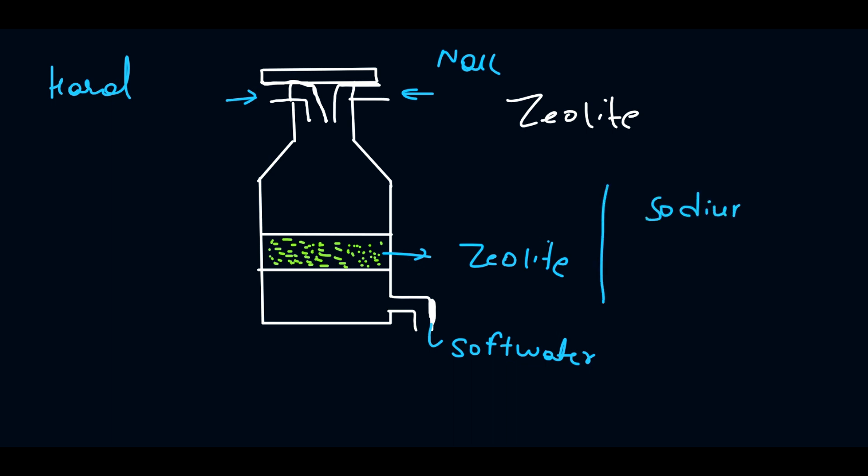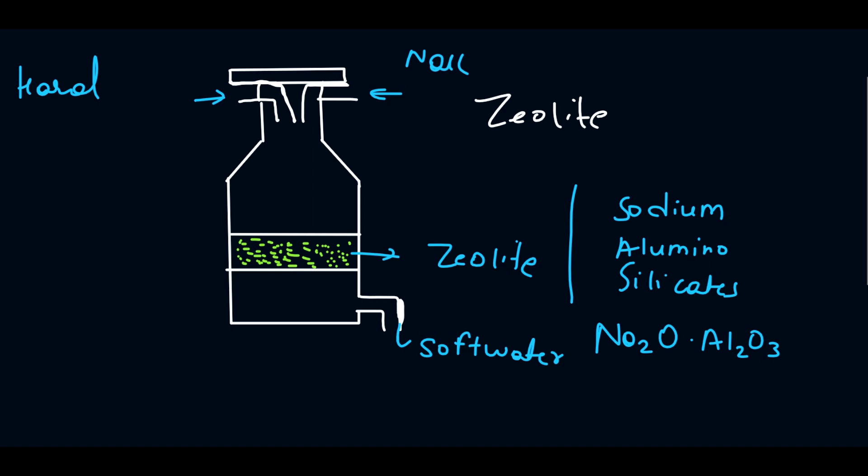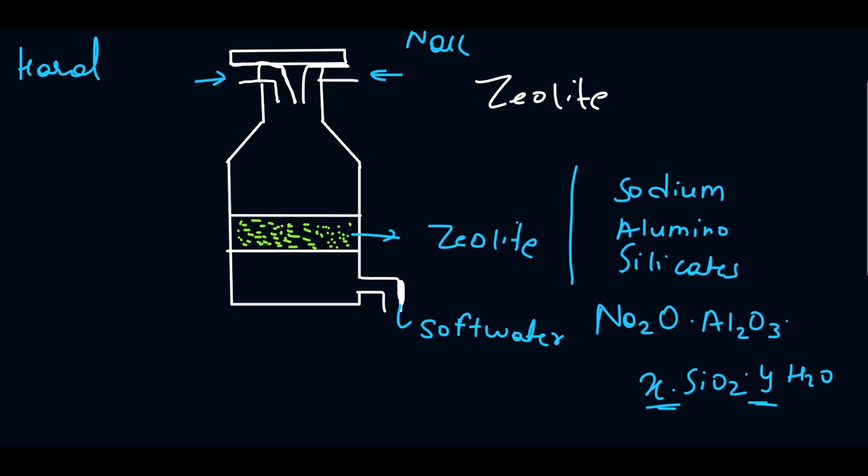What is zeolite made of? It is made of sodium aluminum silicates. The formula is Na2O·Al2O3·X SiO2·Y H2O, where X and Y denote the number of molecules. X can range from 2 to 10, and Y can range from 2 to 6.